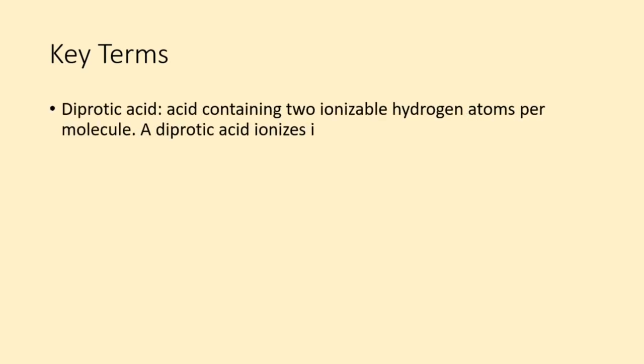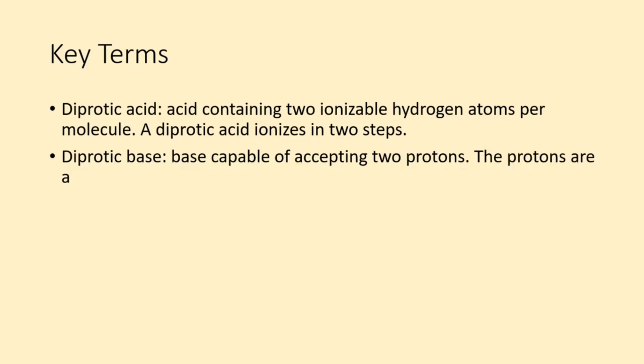Here are some key terms for this chapter. Diprotic acid, acid containing two ionizable hydrogen atoms per molecule. A diprotic acid ionizes in two steps. Diprotic base, base capable of accepting two protons. The protons are accepted in two steps.